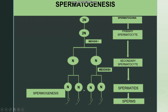The spermatids undergo transformation to produce spermatozoa, and this process of transformation of spermatids into sperms is called spermiogenesis. The sperm head remains embedded in the Sertoli cells and draws nutrients from them. The sperm is then released from the seminiferous tubules by a process called spermiation. So: spermatogenesis is the formation of the male gamete; spermiogenesis is the transformation of spermatids into sperms; and spermiation is the release of spermatozoa from the seminiferous tubules.